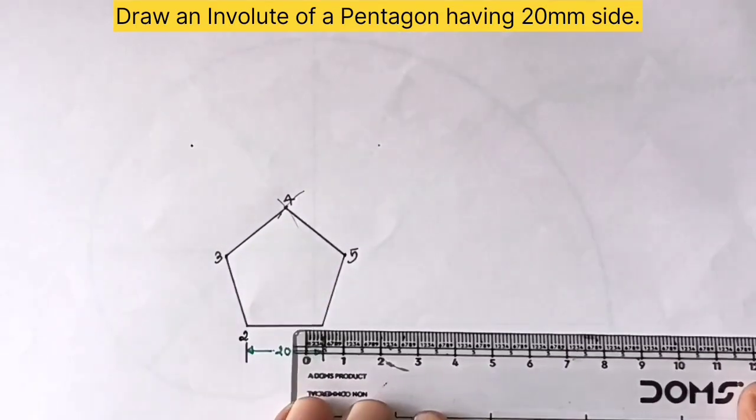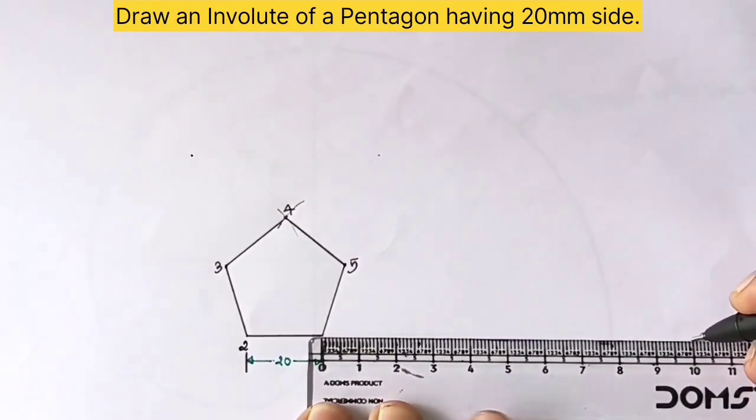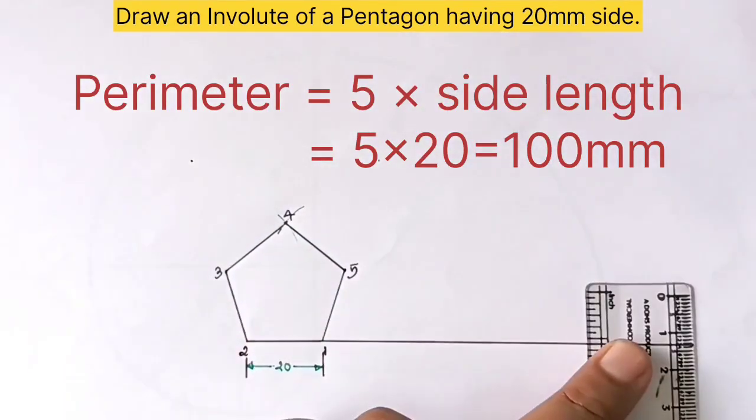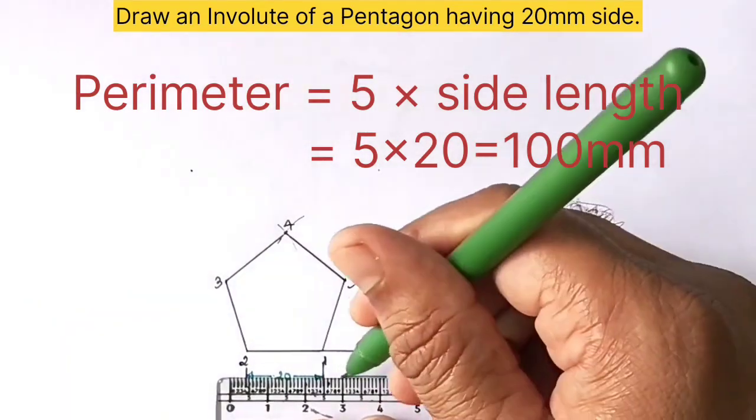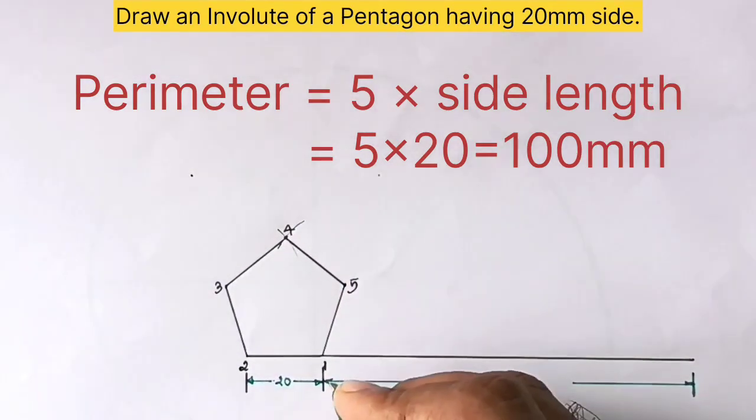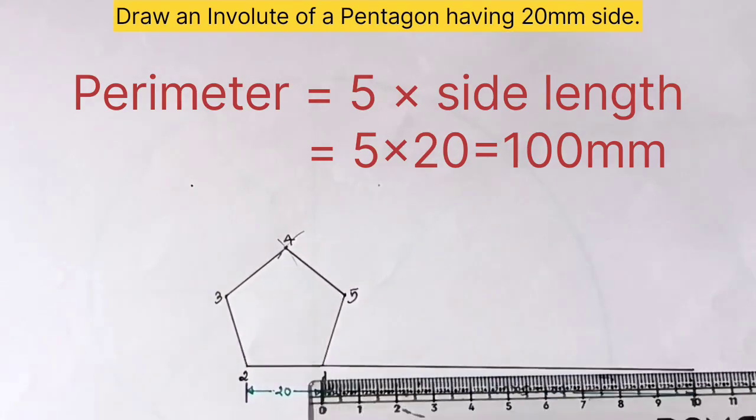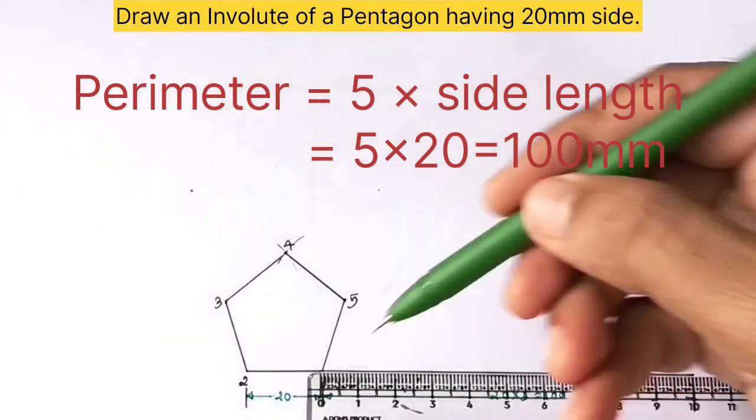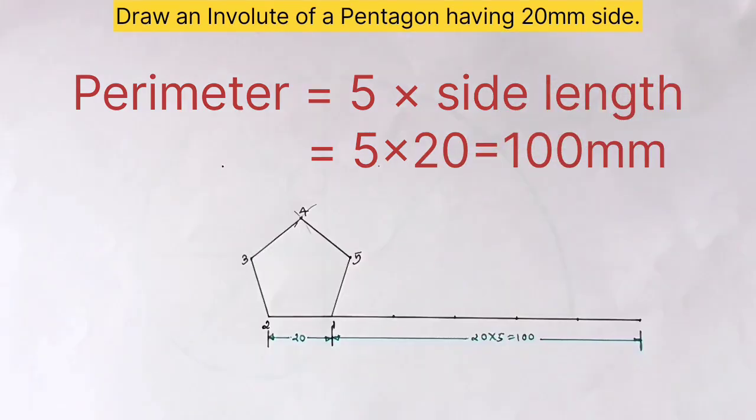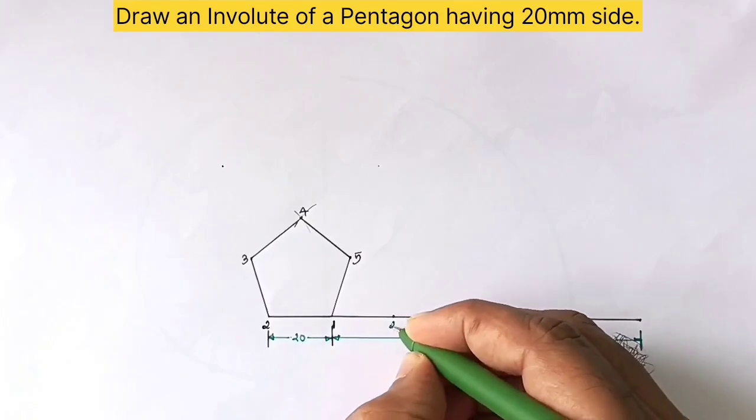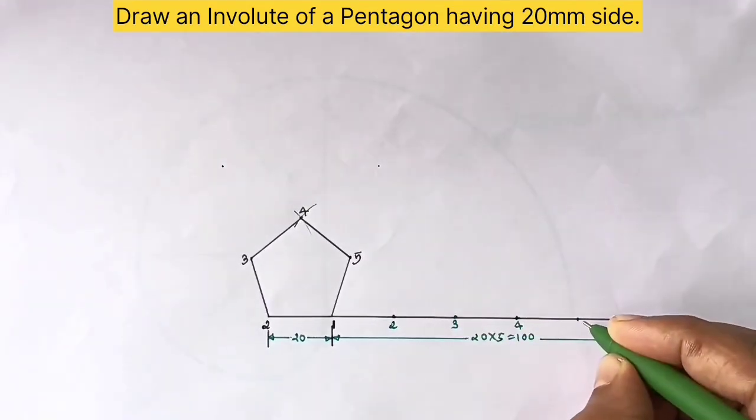Now draw a line from point number 1 whose length should be equal to the perimeter of the pentagon. The perimeter means sum of all the sides, so 20 multiplied by 5 sides equals 100mm. Divide this line into 5 equal parts, the 5 sides of the pentagon. Label these points as 1, 2, 3, 4, and 5.